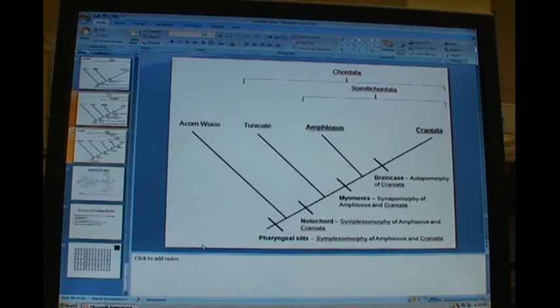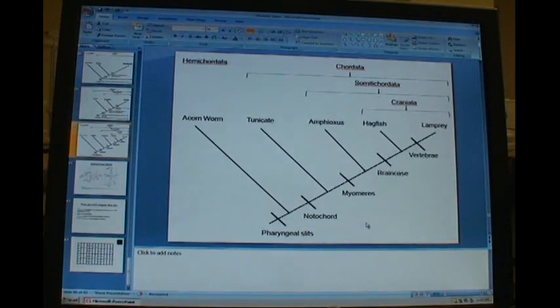Myomeres is an autapomorphy. Moving forward, if you were just to reconstruct this tree, ultimately you can get at that final tree that you saw in the beginning, but the properties of these traits, whether they were symplesiomorphies or plesiomorphies, whether they were synapomorphies or autapomorphies, change given the context.